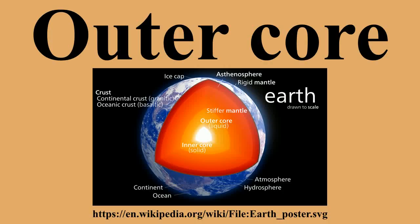The outer core of the Earth is a fluid layer about 2300 km thick, composed mostly of iron and nickel. It lies above Earth's solid inner core and below its mantle. Its outer boundary lies 2890 km beneath Earth's surface, and the transition between the inner core and outer core is located approximately 5150 km beneath the Earth's surface.